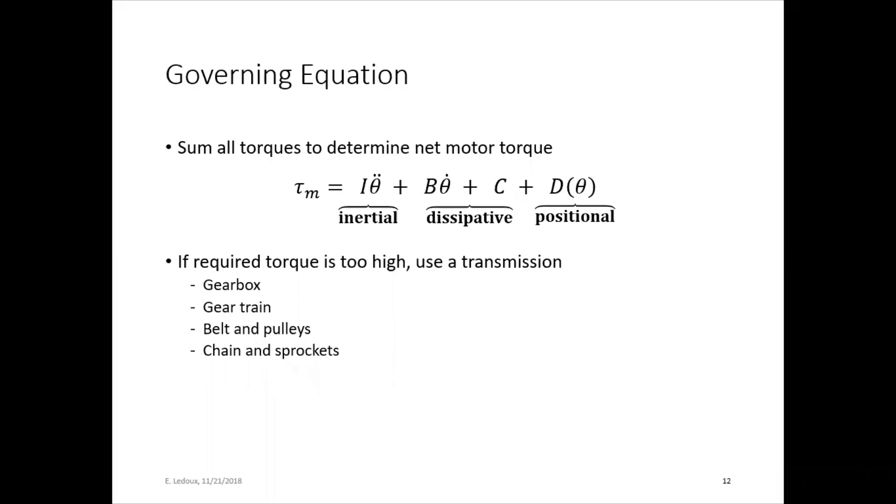Now back to the governing equation. Sum all the torques to determine the net motor torque. So this is the maximum torque that your motor will require. To find that maximum torque, you'll want to know what's going to be the acceleration you need, your max speed, friction, your max positional torque. So if you throw all that in there, then you'll get max torque that your motor needs to use.